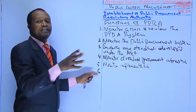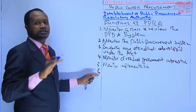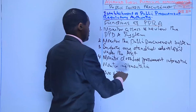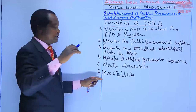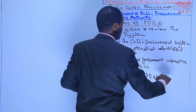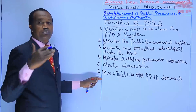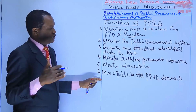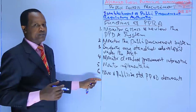The sixth function is to prepare, issue, and publicize standard public procurement and asset disposal documents. The PPRA is also required to publicize the formats to be used by public entities and other stakeholders.